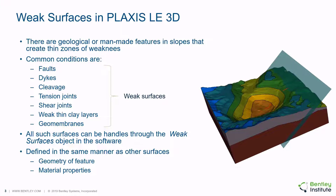The Plaxis LE software implements an object called weak surfaces that is intended to provide functionality to model all of these geologic or geotechnical man-made weak layers that have negligible thickness. These weak surfaces are defined in the same manner as other surfaces in that there is the geometry of the feature, which is effectively a surface, as well as material properties the user may assign. The geometry of a weak surface amounts to a layer with zero thickness, which is therefore a surface.